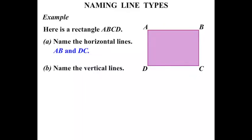And this one we need to name the vertical lines, the ones going straight up and down. Well, you can see that line there going straight up and down. We could call that AD. By the way, we could also call that DA. It doesn't matter what order we write the letters in. AD would be the same as DA.